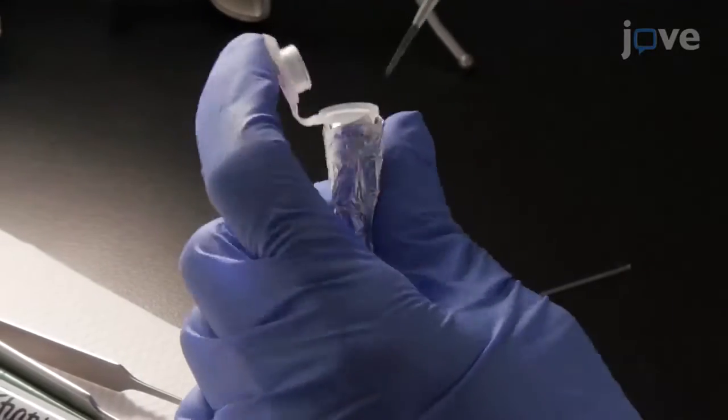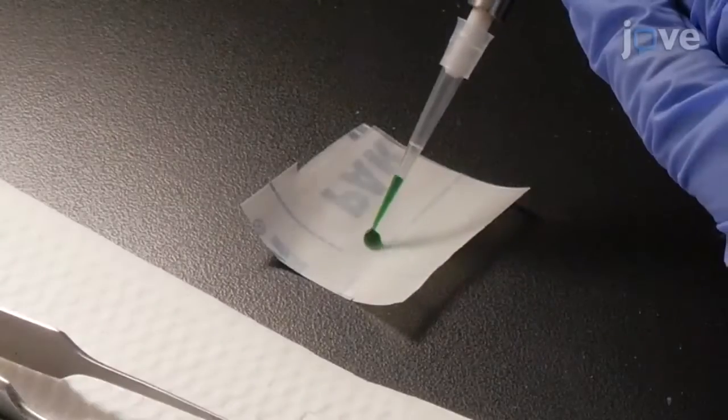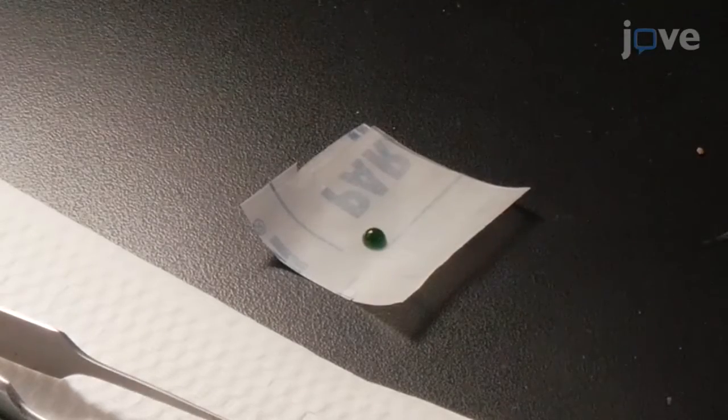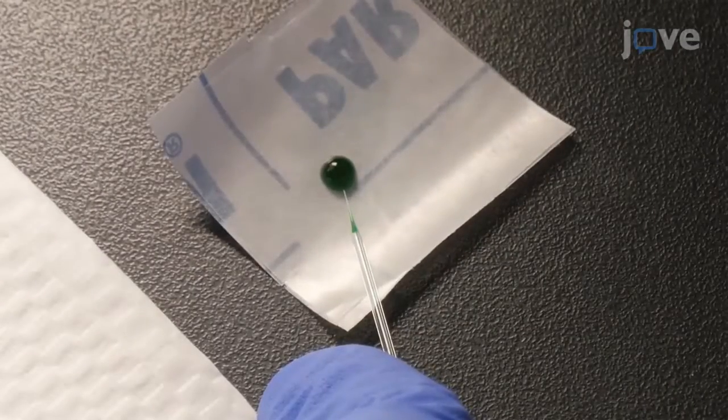Dispense 10 µL of 1.6 mg per mL particles onto a small square of parafilm, and pull the liquid into the needle.